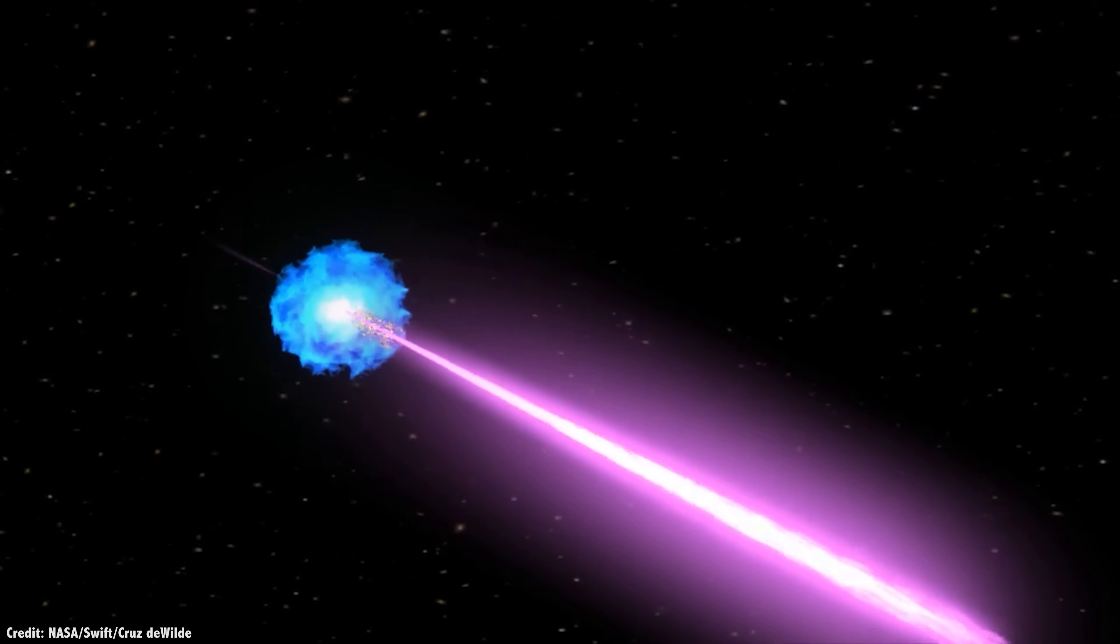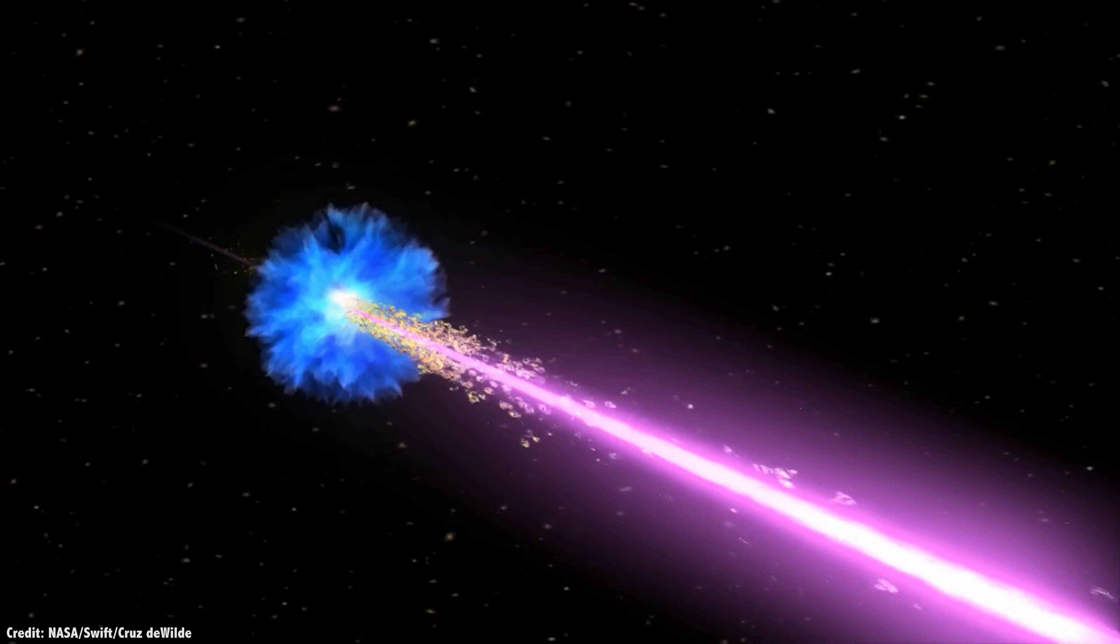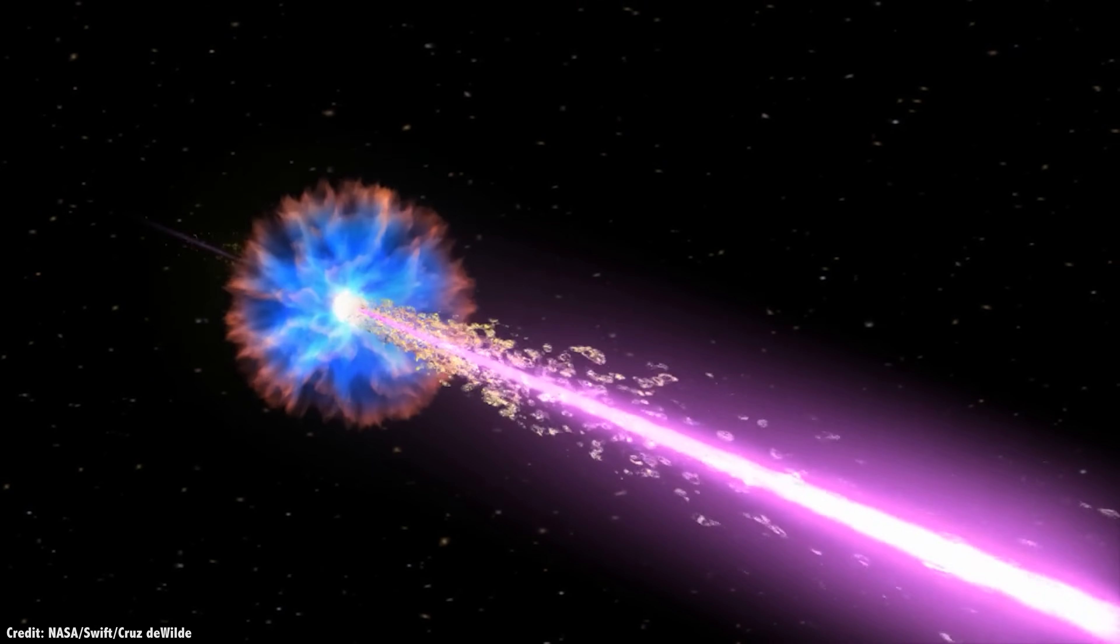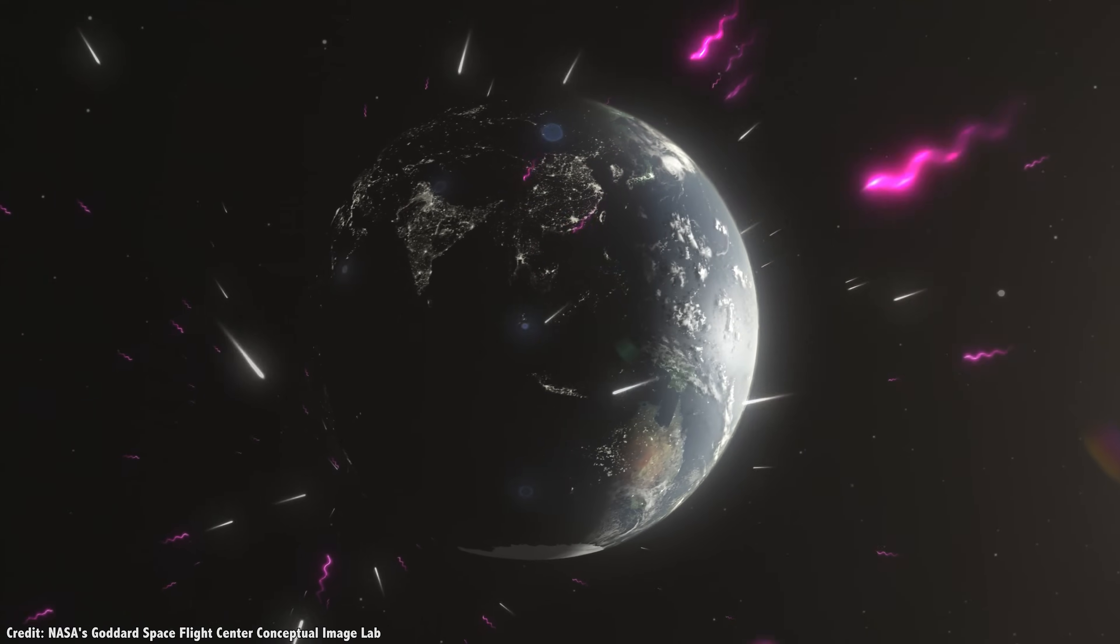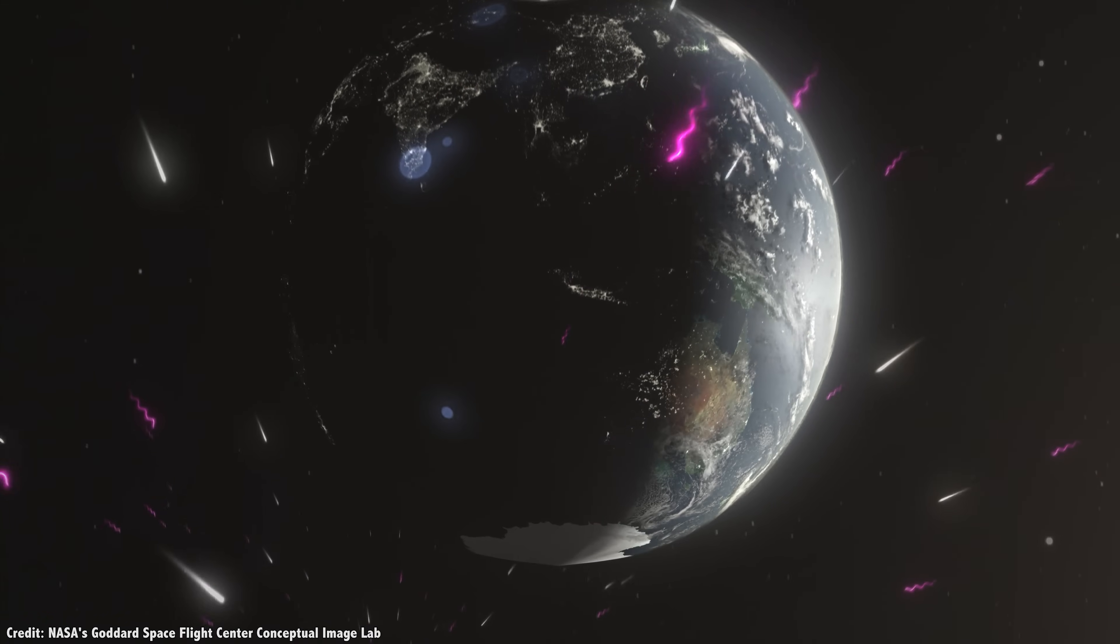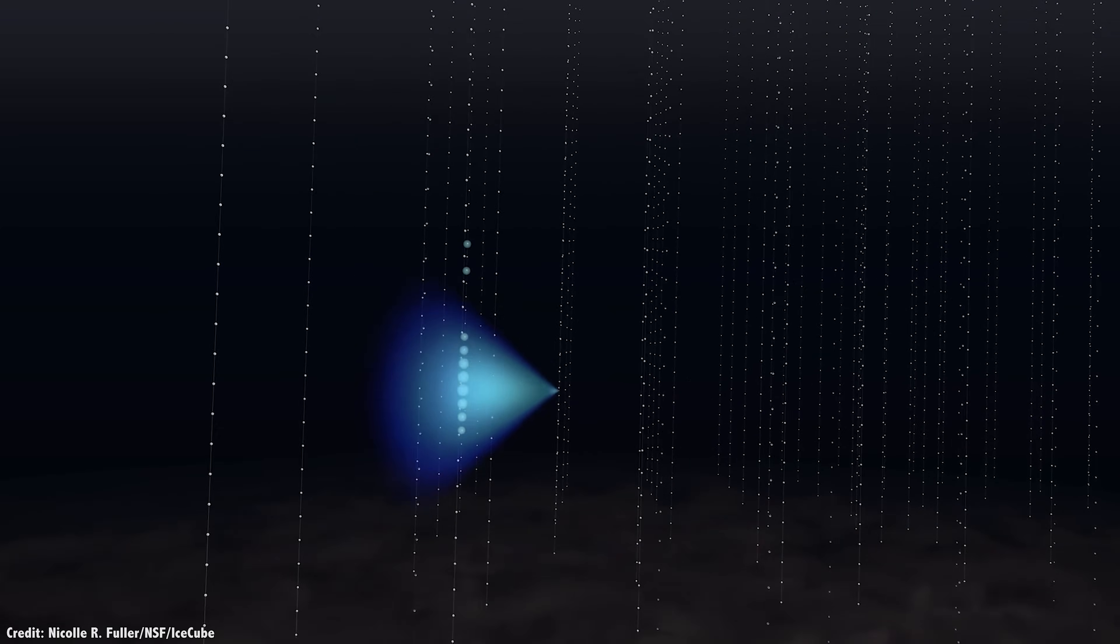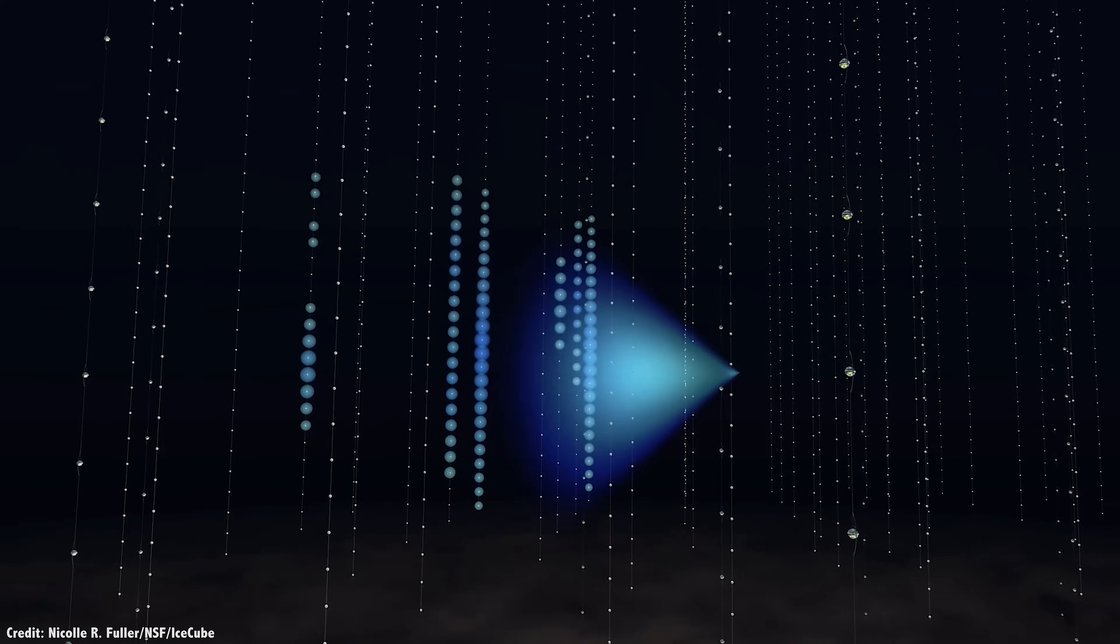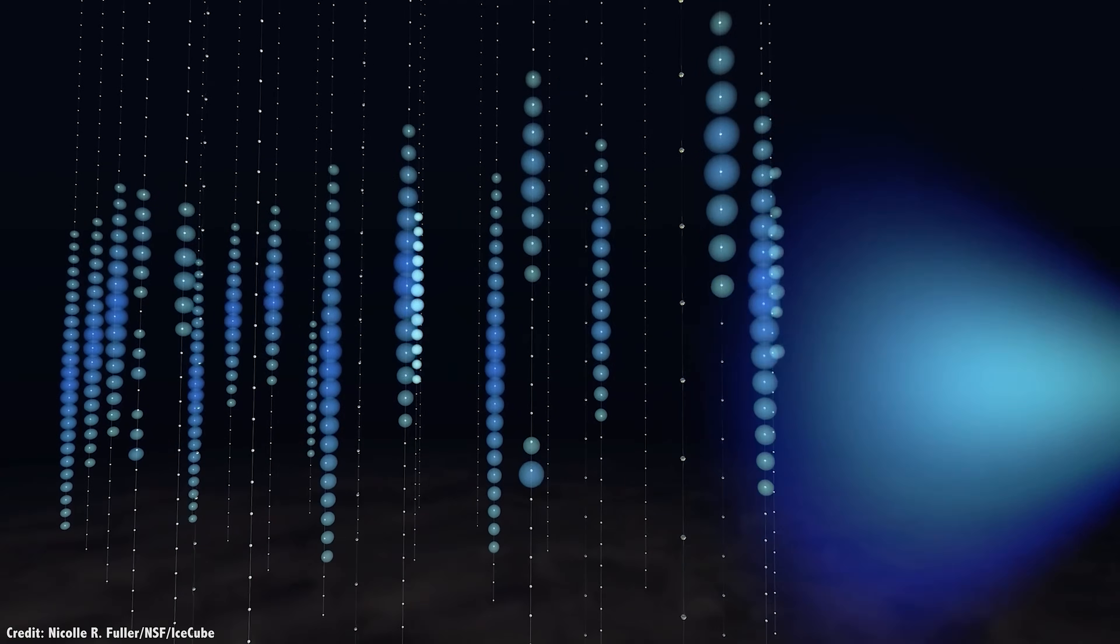As a black hole's mass decreases, its temperature increases, and in the end, it will disappear in a sudden flash of gamma radiation and other particles. One of these particles, for example, is the neutrino. In 2019, researchers published a paper proposing that the IceCube neutrino detector in Antarctica could theoretically detect the neutrino from an evaporating primordial black hole during the last 1,000 seconds of its life.